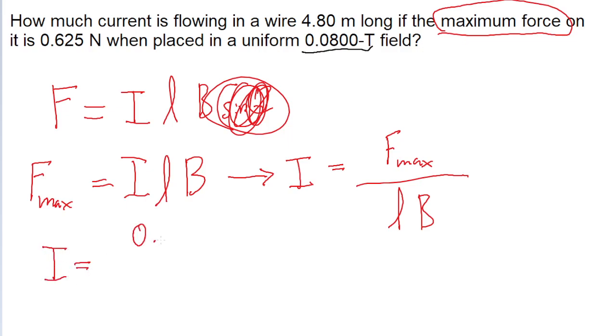So the maximum force is 0.625 newtons, and then divided by the length of the wire, so 4.8 meters. Then the magnetic field strength, which is 0.08 teslas. And if you put this into a calculator, then we find a current of about 1.63 amperes.